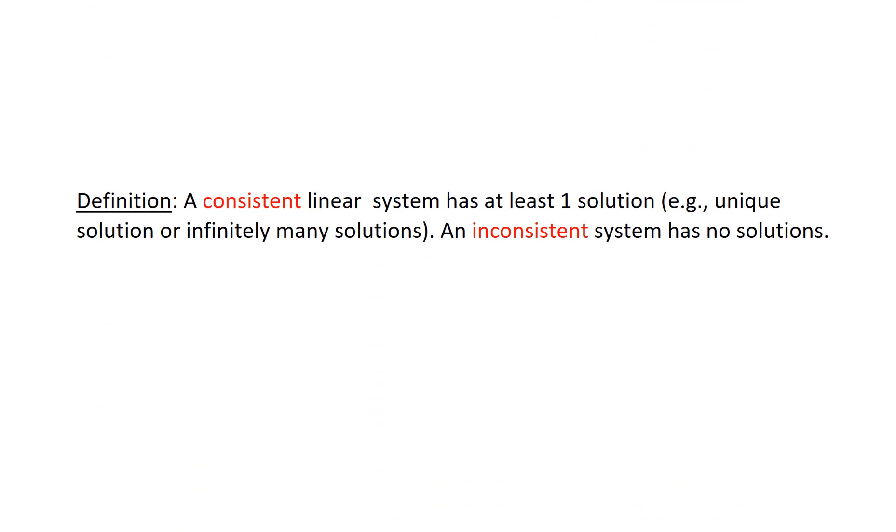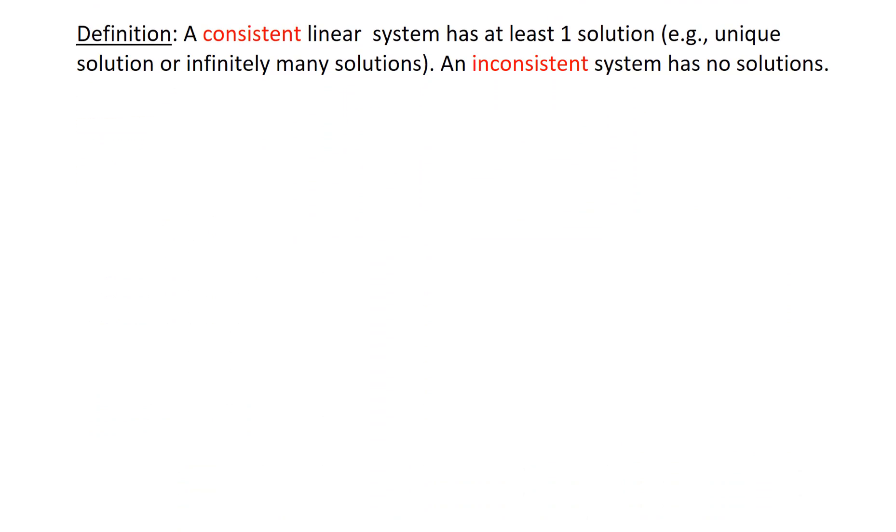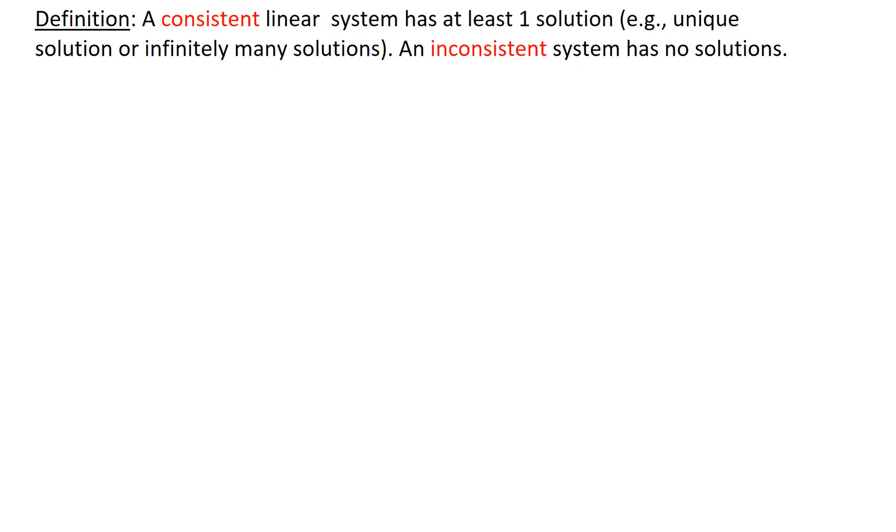The third definition is a consistent versus an inconsistent system. A consistent linear system has at least one solution, either a unique solution or infinitely many solutions. An inconsistent system has no solutions.